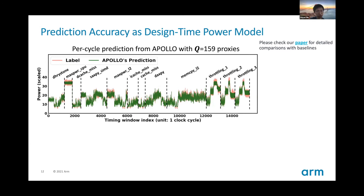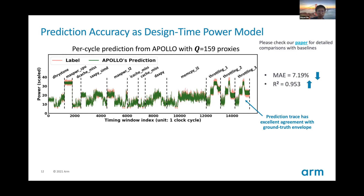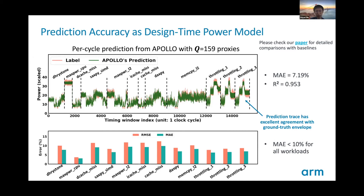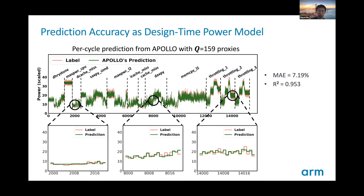This figure shows the per-cycle prediction from the Apollo model, which includes only 159 power proxies as inputs. The prediction trace in green has great agreement with the ground-truth envelope in pink. We measure prediction accuracy using mean absolute error, MAE — smaller is better — and R-squared correlation — larger means higher accuracy. The MAE is less than 10% for all workloads. This error is largely due to small variations in cycle-by-cycle estimations; zooming in shows only small errors between neighboring cycles. This per-cycle prediction error will be averaged under larger measurement windows, and in real-world applications the impact of these minor per-cycle inaccuracies is inconsequential.